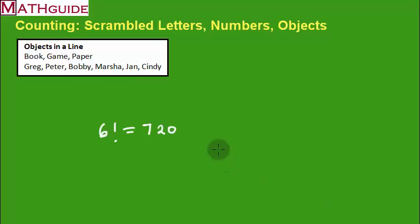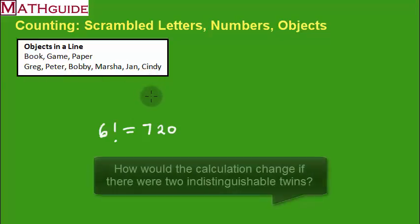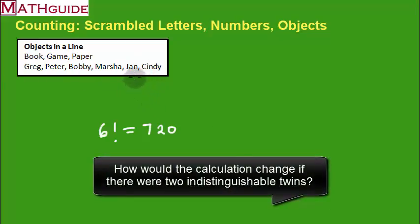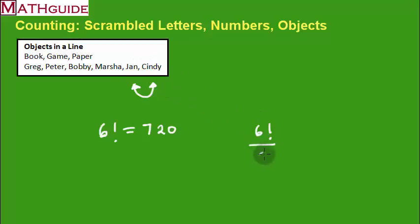Now, I also brought up the case. What if two people were twins? Let's say Jan and Cindy were twins, and an outsider who was looking at these two would never be able to tell them apart. Let's say that's the case. Well, you'd say in that situation where there's indistinguishable twins, you'd say there's six objects, but however, these two are repeating. If I switch their order, no one would know. No one would be able to tell the difference. So now I plug this into the calculator, and this is 360. Half as many. Interesting.